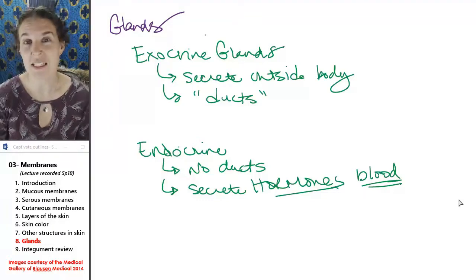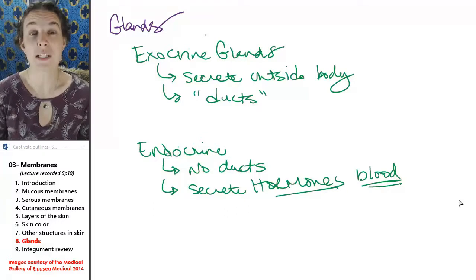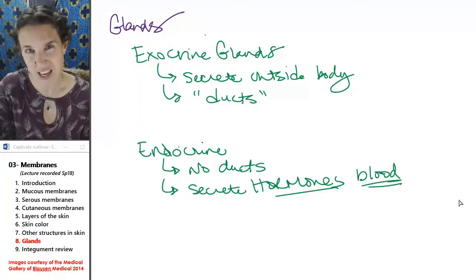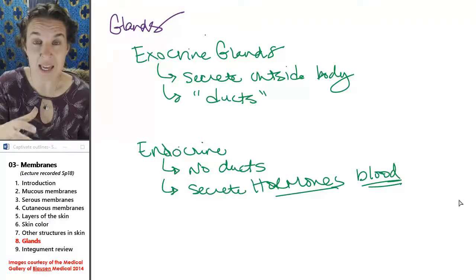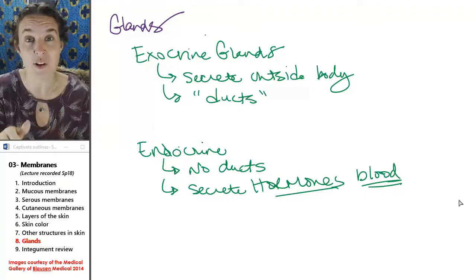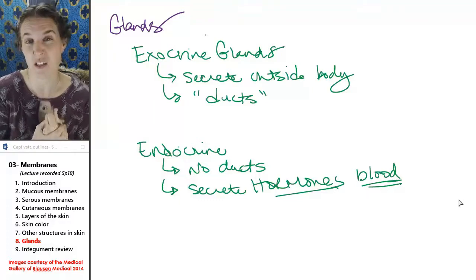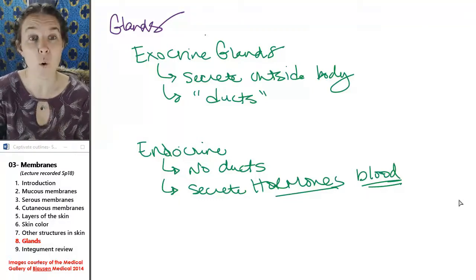Endocrine glands are only associated with blood, so they are highly vascular because you have to be close to the blood to dump your stuff into it. The stuff that gets dumped is a hormone.